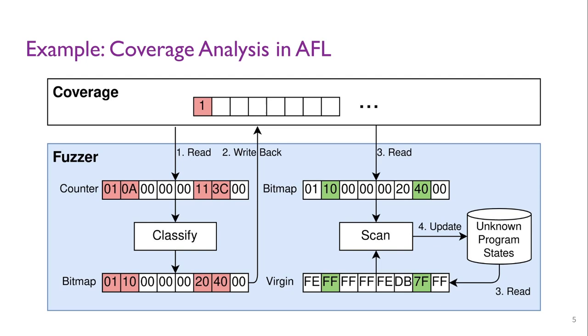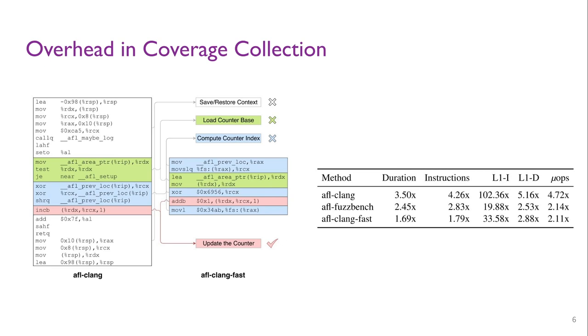Despite the usefulness of coverage, introducing coverage pipelines imposes overhead in both the target program and the fuzzer. For the target program, fuzzers insert instrumentation code for coverage collection at each basic block. The assembly presented shows the original and improved method for AFL's instrumentation. Here, the collection code saves the current register context, loads the base address for counter region.